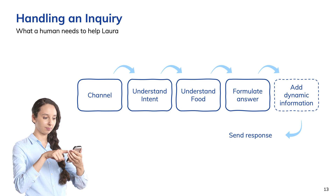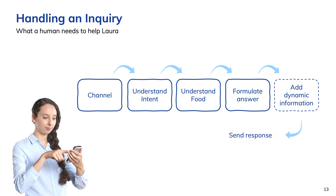To recap: if my friend Laura wants to order a pizza, she starts off in a channel, like a web chat or a phone call. Cognigy understands her intent to place an order and it understands the components of her order, like the type of pizza and its toppings. Cognigy then formulates an answer and adds dynamic information like the total price for her order and sends a response. In conversational automation terms, Laura starts the conversation on an endpoint. Cognigy figures out her intent and the relevant slot matches. In the flow, Cognigy manages the response and uses extensions to retrieve data from systems of record.